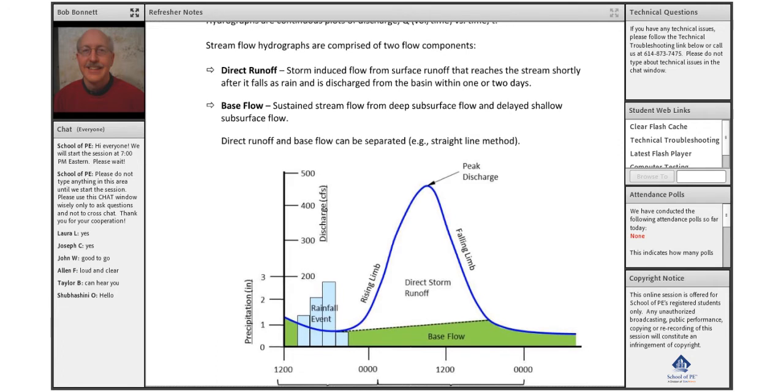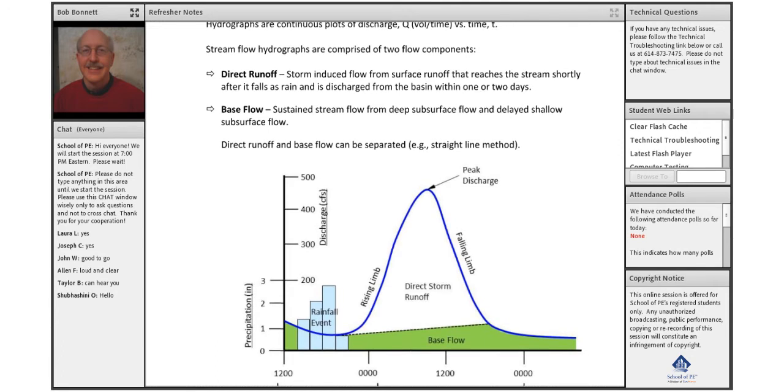Stream flow hydrographs are comprised of two components. The direct runoff is the precipitation that was the result of the particular storm event that occurred. That is this upper part of this particular stream flow.